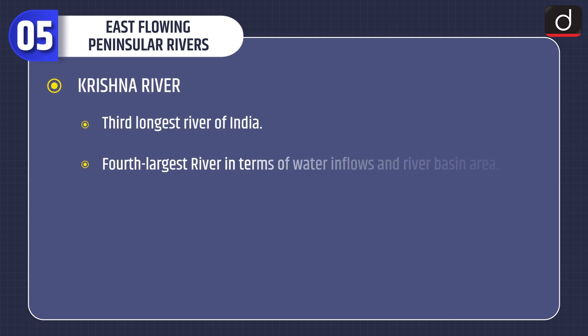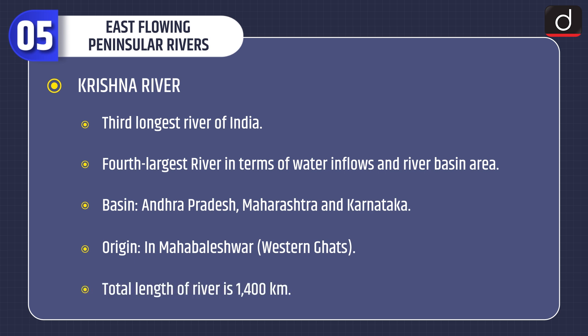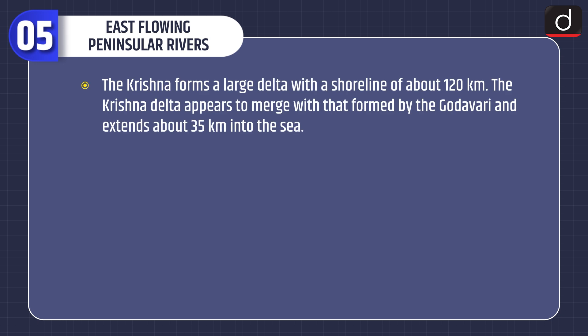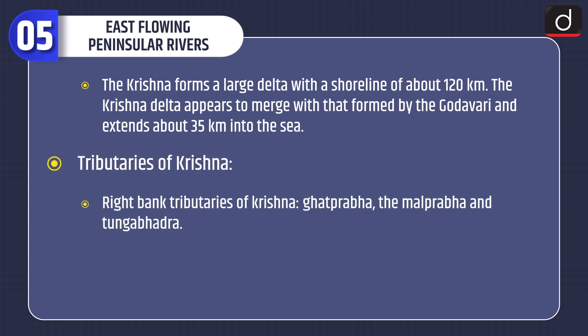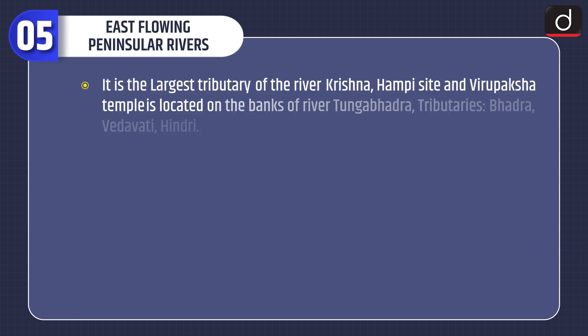Krishna river is the third longest river of India and the fourth largest in terms of water inflows and river basin area. Basin: Andhra Pradesh, Maharashtra and Karnataka. Origin: Mahabaleshwar in the Western Ghats. Total length: 1400 km. The Krishna forms a large delta with a shoreline of about 120 km. The Krishna delta appears to merge with that of the Godavari and extends about 35 km into the sea. Right bank tributaries: Ghataprabha, Malaprabha and Tungabhadra. Tungabhadra is formed by the confluence of the Tunga and the Bhadra rivers, originating in the Western Ghats near Kudremukh hill ranges. It is the largest tributary of Krishna. Hampi site and Virupaksha temple are located on the banks of the Tungabhadra.